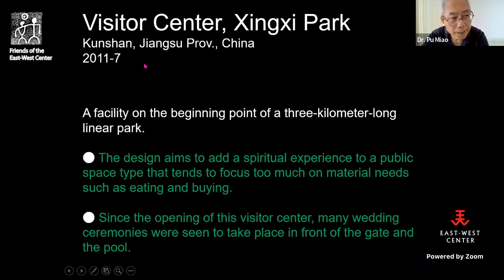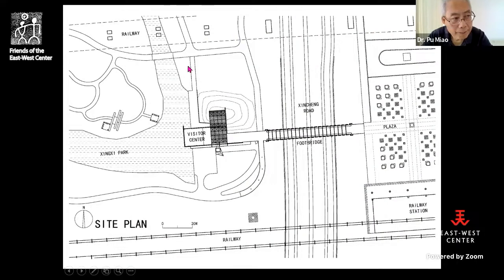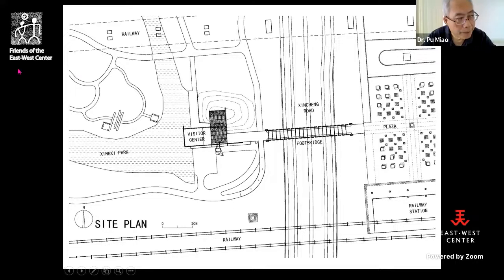The building I'll use to illustrate this point is the Visitor Center in Kunshan. On the west side of Kunshan, the city built a linear park between two high-speed railway lines. This linear park extends continuously westward all the way until it meets Yangteng Lake. The park is three kilometers long, and at the east end there is a railway station plaza. The city decided to build a visitor center on a site next to the plaza.